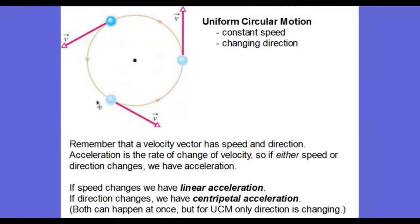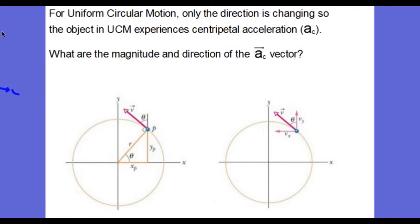Here's a diagram of a particle moving in a circle with uniform circular motion. It's called uniform circular motion because the speed is uniform or constant. All three vectors have the same magnitude; only the direction is changing. A velocity vector has speed and direction, so if either changes, we have acceleration. If speed changes, we call it linear acceleration; if direction changes, we call it centripetal acceleration. For uniform circular motion, only the direction is changing, so the object experiences centripetal acceleration.